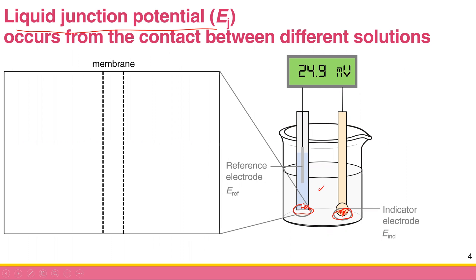Why does liquid junction give you potential? Consider that you have a membrane dividing two solutions: the first solution is 0.1 molar hydrochloric acid and the second is 0.01 molar hydrochloric acid. You have something unequal between these two sides, so the hydrochloric acid wants to diffuse from the high concentration side to the low concentration side — from the left to the right.